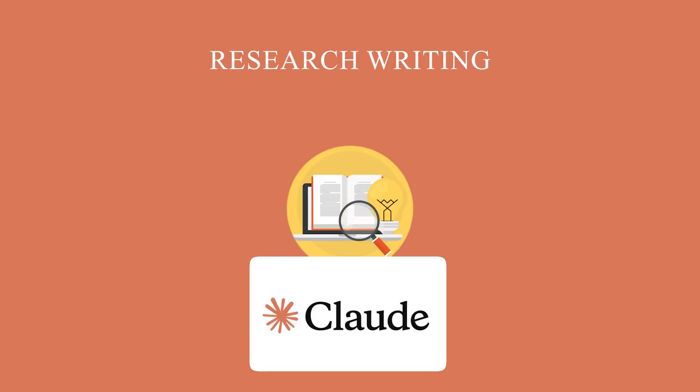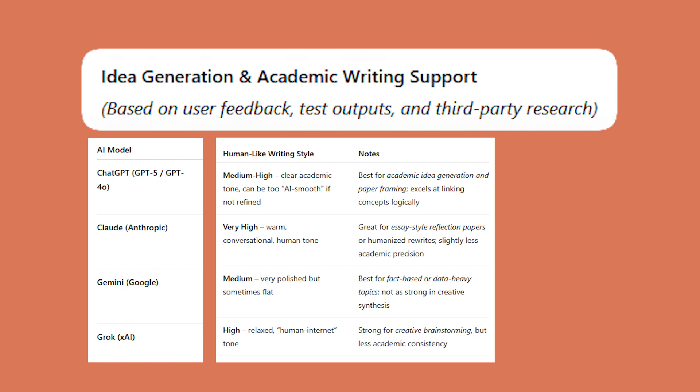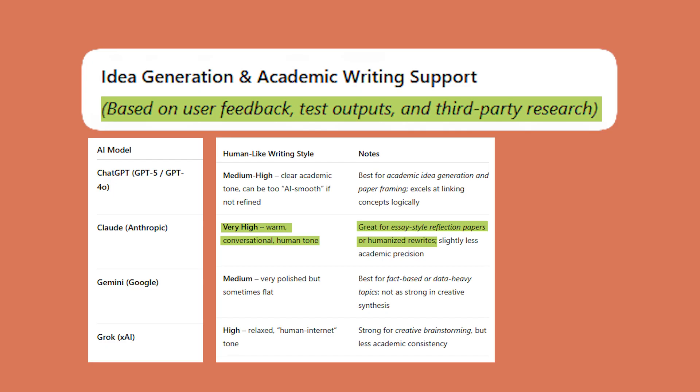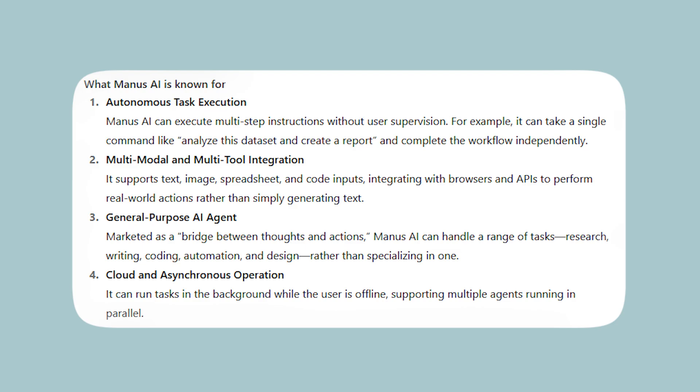There are two other AI tools which are very fantastic. Number one is Claude and Manus AI. Claude is also a free option and you can use it for research writing and literature review purposes. Claude does not hallucinate and in most cases it gives you real literature review citations. So use Claude for real research article citations. And in order to write a good final research article for submission, Manus AI can help you very easily.